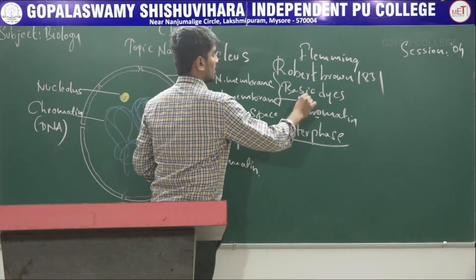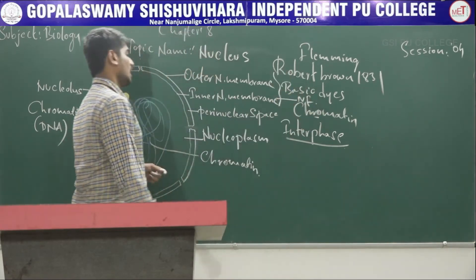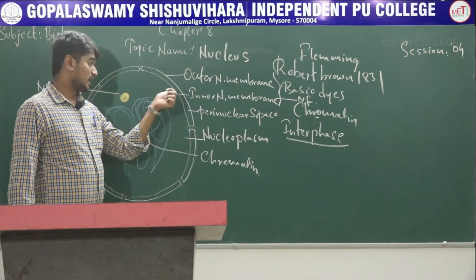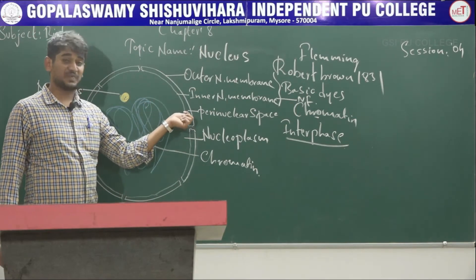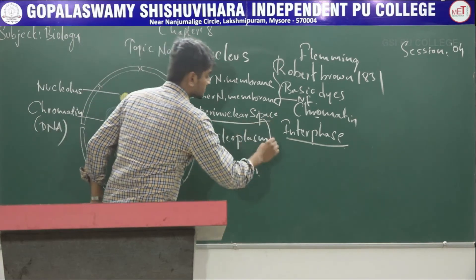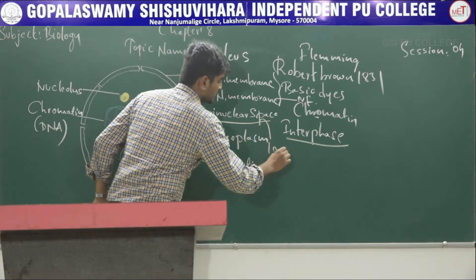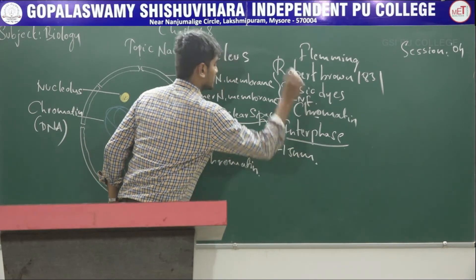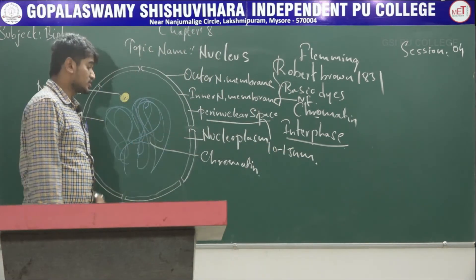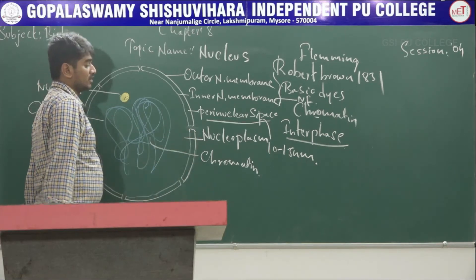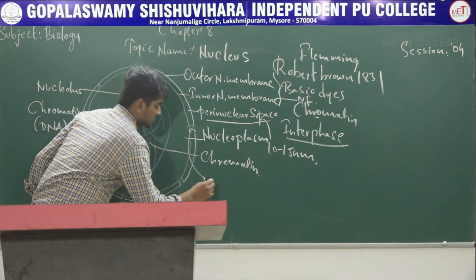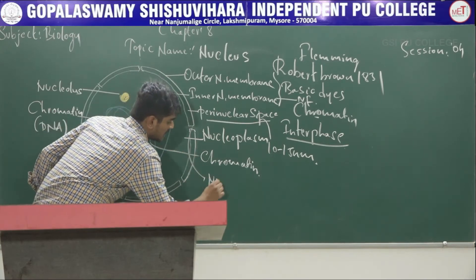The nucleus is covered by a nuclear envelope or nuclear membrane. In between the outer membrane and inner membrane, there is a space called the perinuclear space, which is 10 to 15 nanometers wide. The discontinuous regions of the nuclear membrane or nuclear envelope show the presence of pores called nuclear pores.